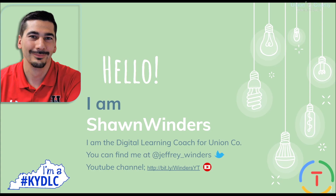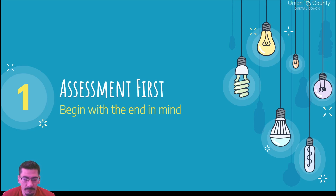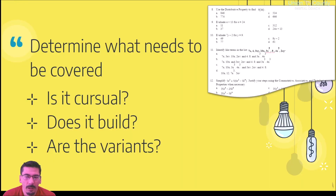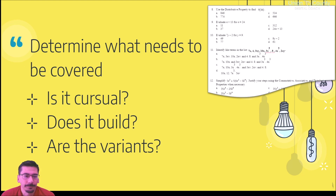The very first thing we want to do is actually look at your assessments. Just like when you're planning out your curriculum — start with what you want to assess first and then work backwards. We're going to do the same thing for a self-paced classroom: look at your assessment, look at your key components about what you want to build, what items are crucial, what pieces are required to build on later, and what are some variations or different teaching methods.